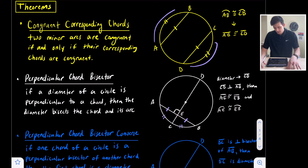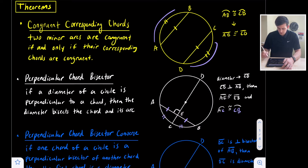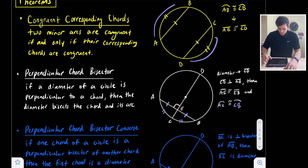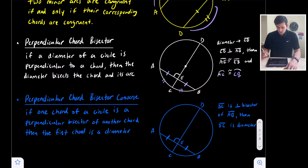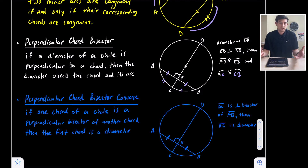So arc AC and arc CB would be congruent to one another as well. The last theorem here is the Perpendicular Chord Bisector Converse: if one chord of a circle is a perpendicular bisector of another chord, then the first chord is a diameter. Using the same diagram, we're given the opposite information — the congruent tick marks and the right angle box show DC is a perpendicular bisector, which proves that DC is in fact the diameter.